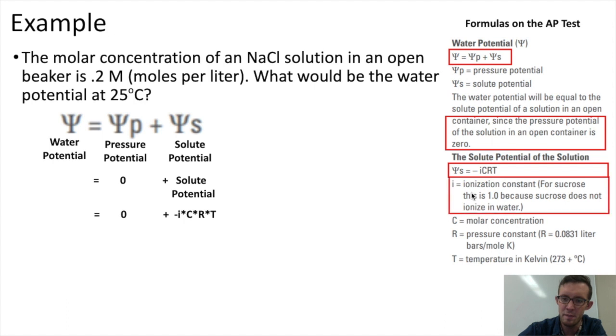Let's start with the I value. The I is the ionization constant, which is just equal to the number of particles that a solute breaks into when it dissolves. So in this case, we have an NaCl solution. Since NaCl would dissolve into two separate particles, the I value for sodium chloride would be 2. So we could sub that in here. Now instead of negative I, we have negative 2.